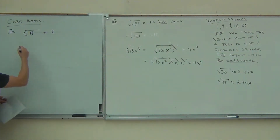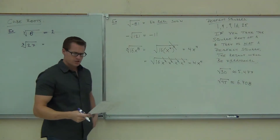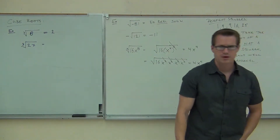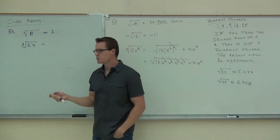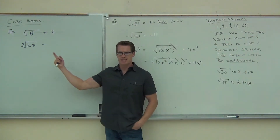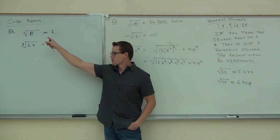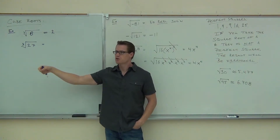Let's try a few more. Cube root of 27 — just think about it. Cube root of 27 means it's not a square root. Can you even take a square root of 27 and get a whole number? You can on a calculator, but it won't be a whole number. Can you take a square root of 8 and get a whole number? No. Cube roots are different.